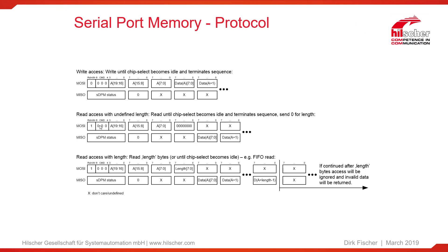For a read access, the MSB is set to one. You provide the data address, and then the NETX side will provide the data from that address. There are two options: you can keep the chip select active and read many bytes in sequence — you don't have to specify the length, just keep chip select active and provide clock signals, and NETX will provide data with auto-incremented addresses. The second variant is to specify a length — for example, 10 bytes — and then you receive exactly 10 bytes from NETX.